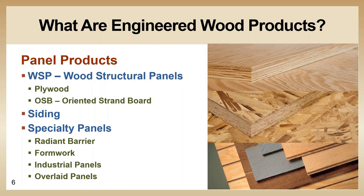Starting with what is an engineered wood product: engineered wood could be described as any wood-based building material that's been improved physically through a man-made process. Our engineered wood products generally can be divided into two categories — panel products and framing. At APA, we talk a lot about wood structural panels, and wood structural panels include plywood and OSB.